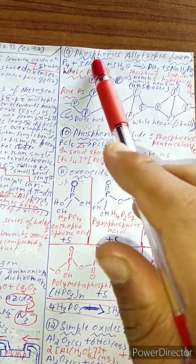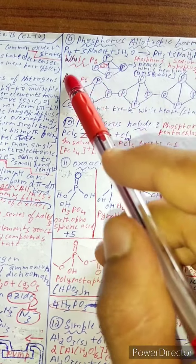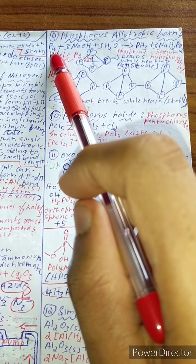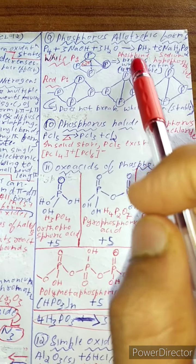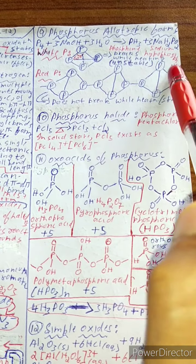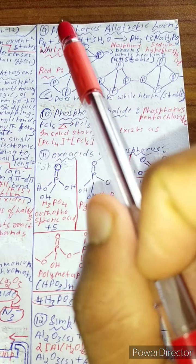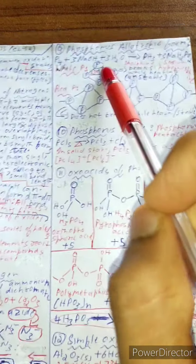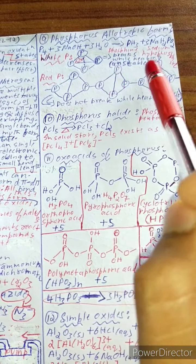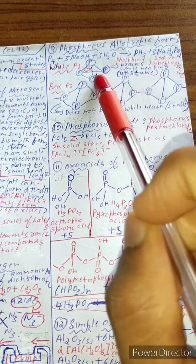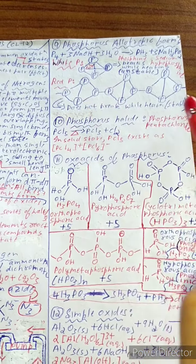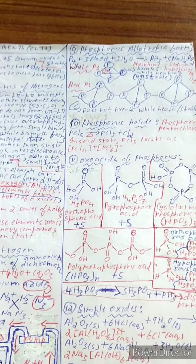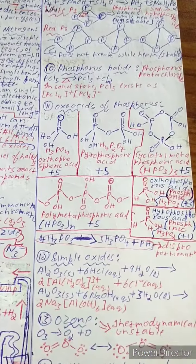Allotropic forms of phosphorus: phosphorus is represented as P₄. Reaction: P₄ + 3NaOH + 3H₂O → PH₃ + sodium hypophosphite. White phosphorus breaks on heating (unstable) and has 60° bond angles with a P₄ tetrahedral unit. Red phosphorus does not break on heating — it is stable — and exists as a polymeric structure.